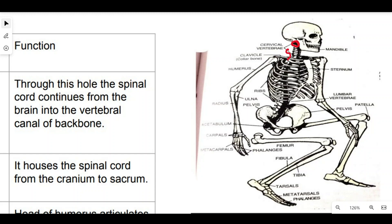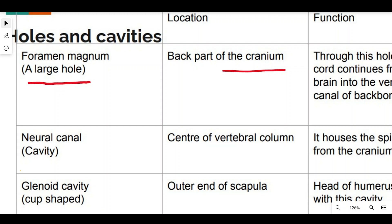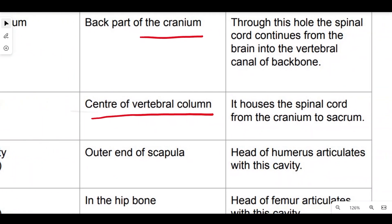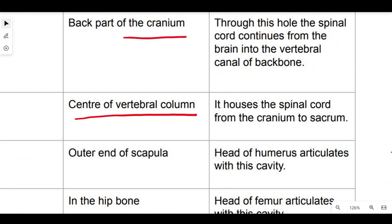The neural canal is a cavity present at the center of the vertebral column in the dorsal part of the body. It runs from the cranium to the sacrum and houses the spinal cord. The cranium is the part of the skull, and the sacrum is the large fused portion of the vertebral column made up of the sacral vertebrae.